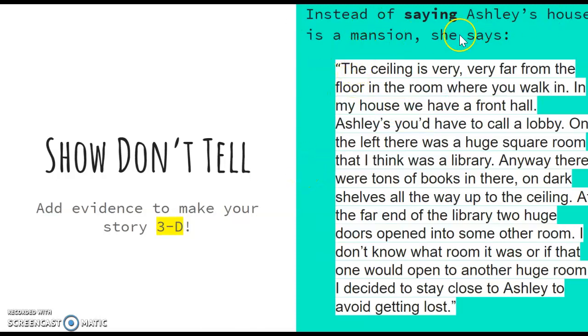Instead of saying Ashley's house is a mansion, she says, the ceiling is very, very far from the floor in the room where you walk in. In my house, we have a front hall. Ashley's, you'd have to call a lobby. On the left, there was a huge room that I think was a library. There were a ton of books in there on dark shelves all the way up to the ceiling. At the far end of the library, two huge doors opened into some other room. I don't know what room it was or if that one would open into another huge room. I decided to stay close to Ashley to avoid getting lost.